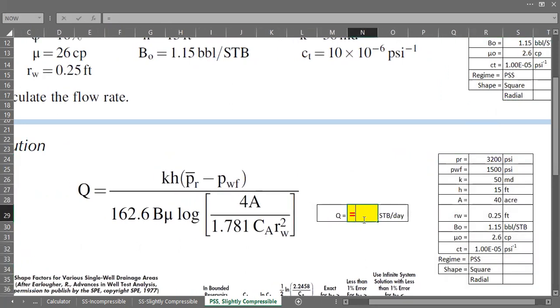First, for the numerator, it's permeability multiplied by thickness multiplied by average reservoir pressure minus flowing bottom hole pressure. I want to make them inside of parenthesis, so this is our numerator and I want to divide it with the denominator.